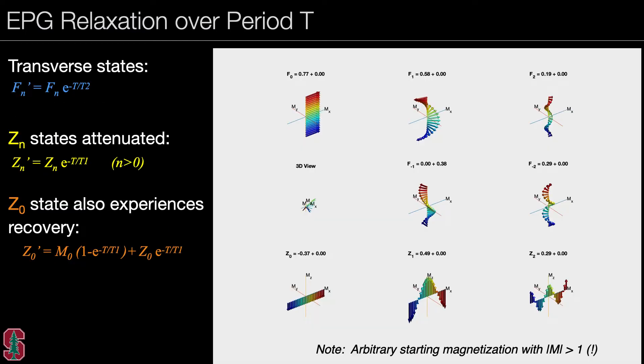So let's look at an animation of this. Here we have an arbitrary starting magnetization. You can easily see that the magnitude of this magnetization at certain positions is much greater than one. But we'll assume we got there through some special means, perhaps hyperpolarization. But the point is to look at the effect of relaxation on different states. And what you'll see is the top two rows are attenuated. But note the Z zero state will have some recovery. So let's go ahead and play that video. So hopefully you can see that attenuation. We can go back in this video. So you can see how the transverse states are all attenuated. But the inverted Z zero state is actually recovering through zero and continues to recover as we play through this video.